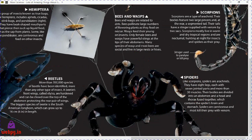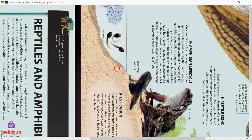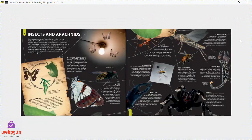Spiders are arachnids and they have eight legs, each with seven joints and more than 30 muscles. Their bodies are divided into an abdomen and a cephalothorax — the head and thorax fused together — which contains the spider's brain and stomach. Spiders are carnivorous and most paralyze their prey with venom.